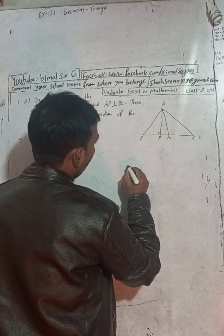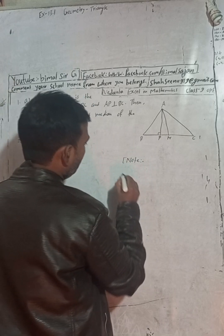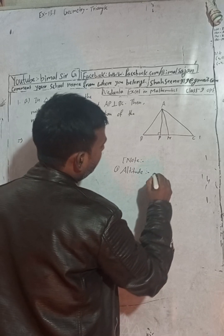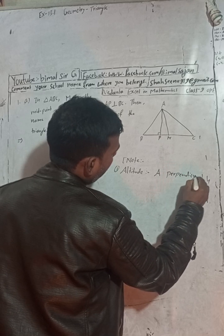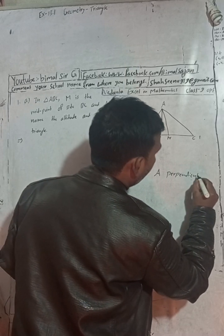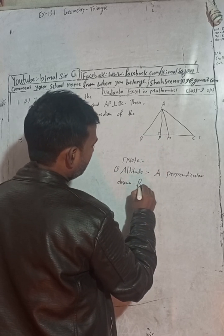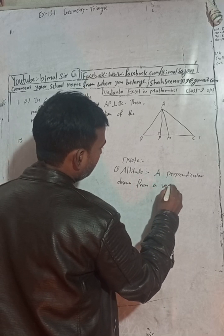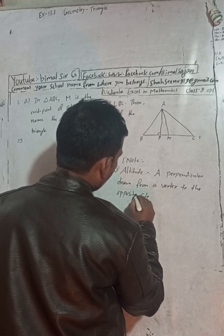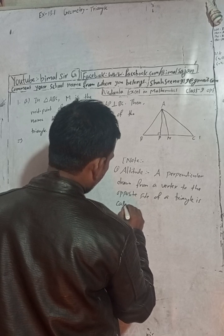Before answering, let me clarify the definitions. Note: What is altitude? A perpendicular drawn from a vertex to the opposite side of a triangle is called the altitude.